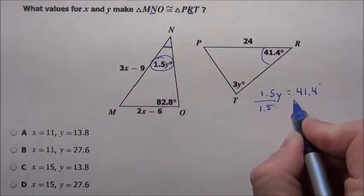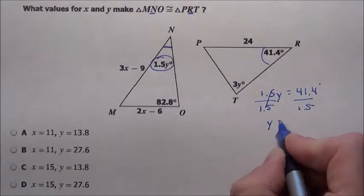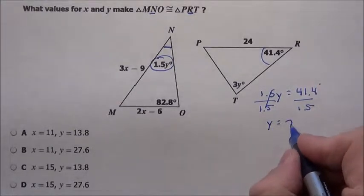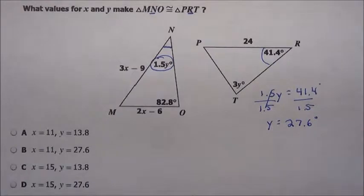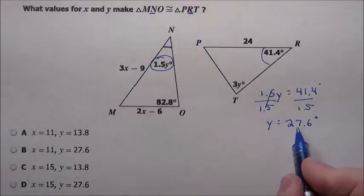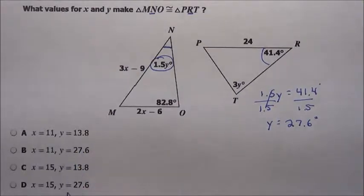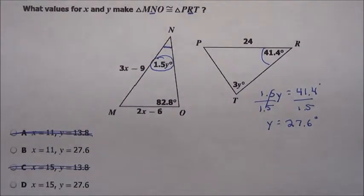I'm going to use a calculator. Divide by 1.5, and I'm going to get 27.6 degrees. That's what y is going to be. Y is going to be the number 27.6. So it's either B or D. We know these are out. So I know y is 27.6.